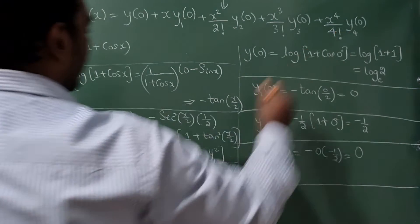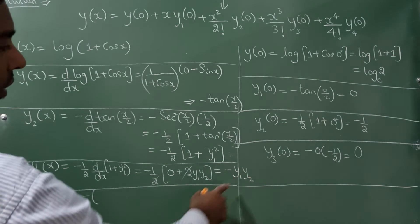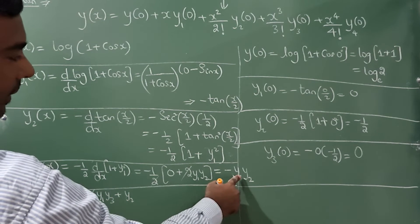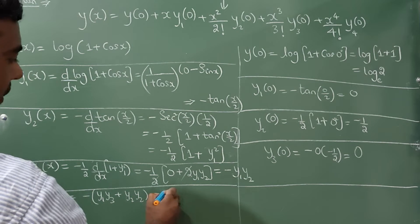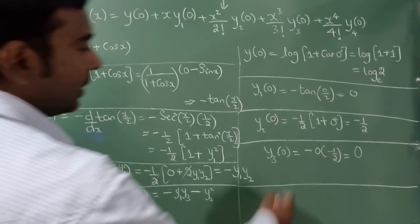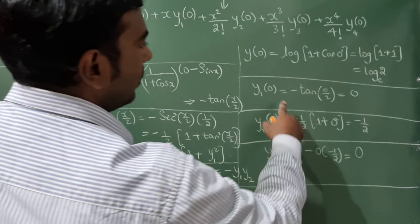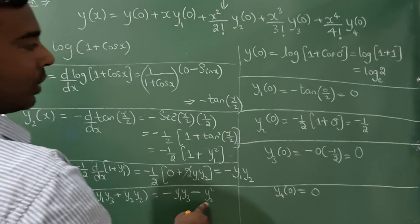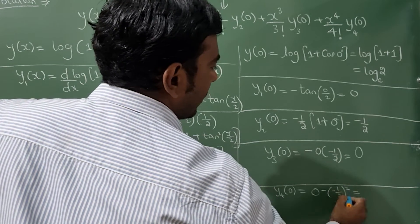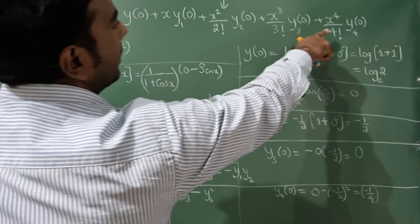Finally, find y₄(x) by differentiating y₃ = −y₁·y₂ using the product rule: y₄ = −(y₁·y₃ + y₂·y₂) = −y₁·y₃ − y₂². Substituting x = 0: y₁(0) = 0, y₂(0) = −1/2, so y₄(0) = −0·y₃(0) − (−1/2)² = −1/4.